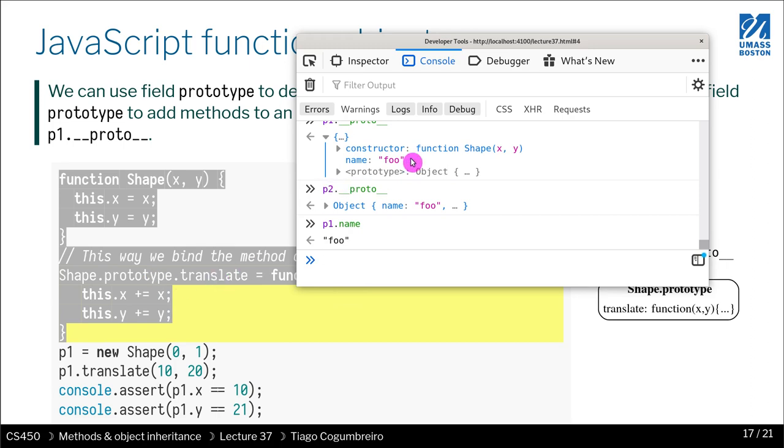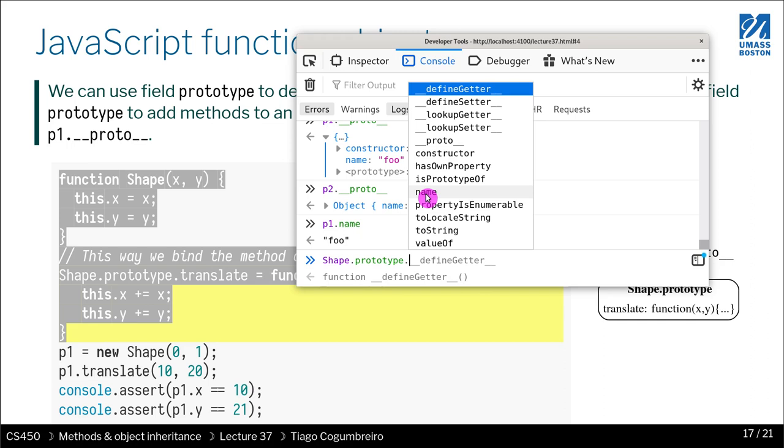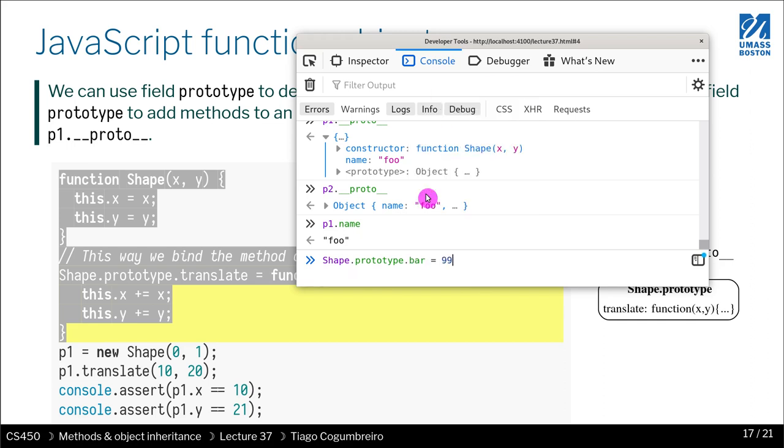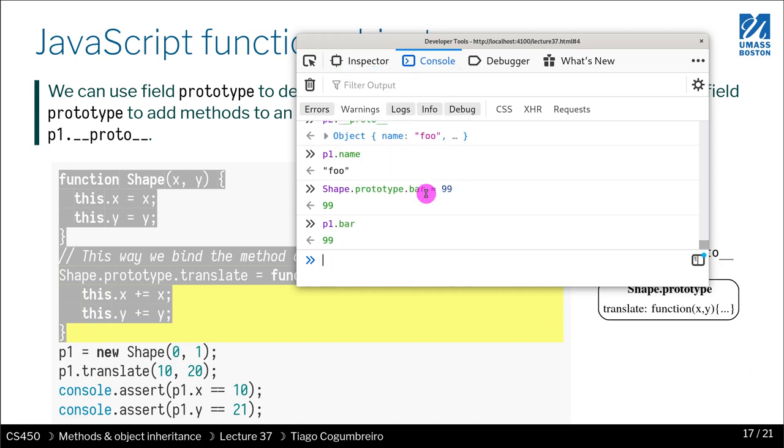So shape.prototype is referenced to P1 and P2. So if I change the prototype shape.prototype to now have a new field, let me call bar to be 99. Now P1.bar exists and is 99. Because this is the prototype of the class. So that's how you set it. So I can still do crazy stuff like proto and create a new object. And now my P1 doesn't have a bar anymore. Because I overwritten what is my proto.